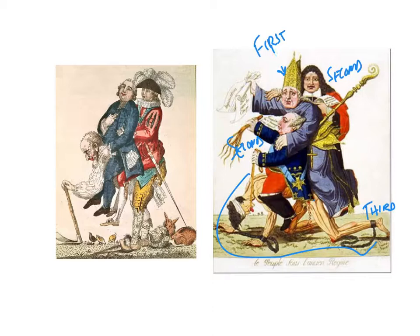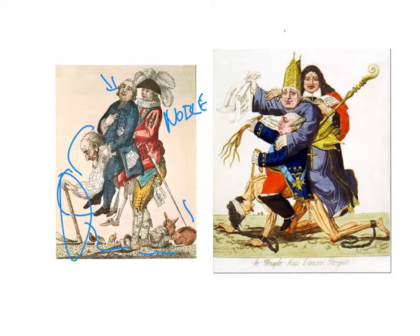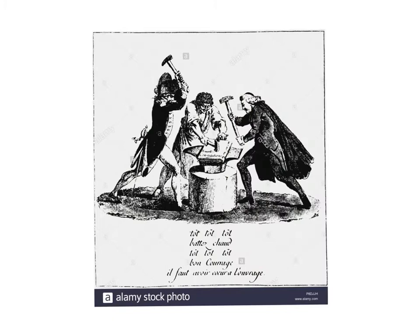On the left-hand side, you see kind of the same idea. An old man, hunched over, walking with great difficulty and with a cane, is carrying on his back a nobleman. And here on his back is also clergy, dressed as a priest would have been then. The third estate is represented by this hunched-over man struggling under the weight of the privileged classes.